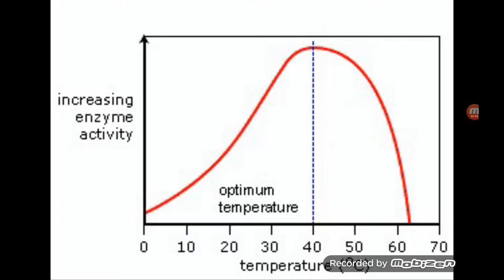But once it gets to 40 degrees, there's too much energy and the active site changes shape. If the active site changes shape, the substrate no longer fits it and the rate of reaction goes down - that's why the graph looks like that.